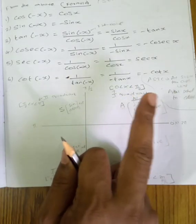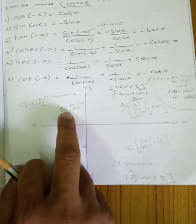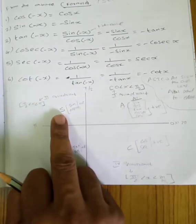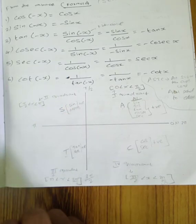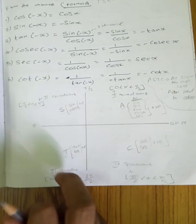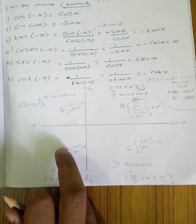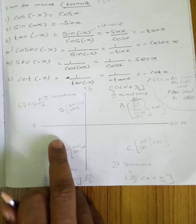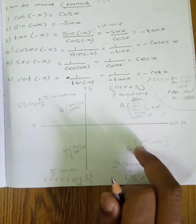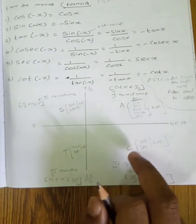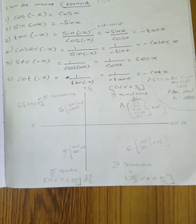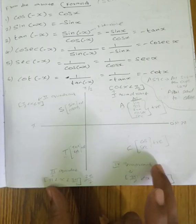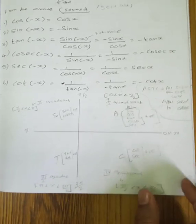These are the positive ones; remaining are negative. Second quadrant: sin and cosecant positive, so cos, secant, tan, cot are all negative. Third quadrant: tan and cot positive, so sin, cos, cosecant, secant are negative. Fourth quadrant: cos and secant positive, so sin, cosecant, tan, and cot are negative. That is the basic formula.